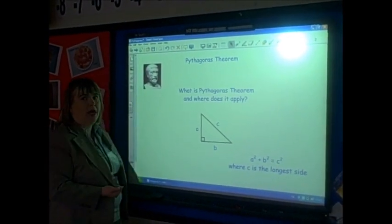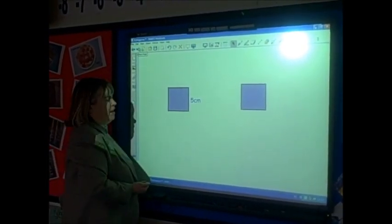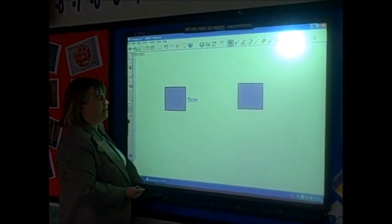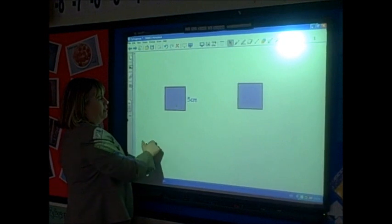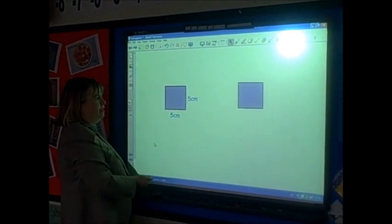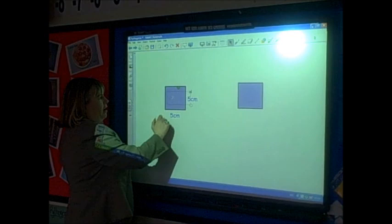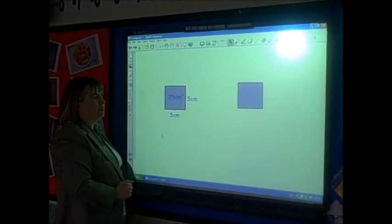But here's Pythagoras made easy. If we want to solve problems using Pythagoras' theorem, we need to understand squares and square roots. If I have a square and one side is 5 centimetres, then all sides will be 5 centimetres and the area of that square will be 5 times 5, which gives 25 centimetres squared.